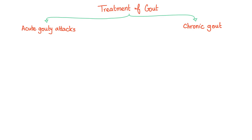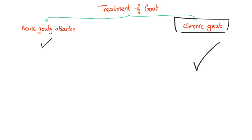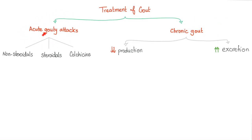Treatment of gout involves two separate categories: treating the acute painful gouty attack and managing chronic gout — these are not the same. Pegloticase is for management of chronic gout. If you have a painful gouty attack right now, pegloticase is not going to help. For the acute painful attack, you need pain medication right now.